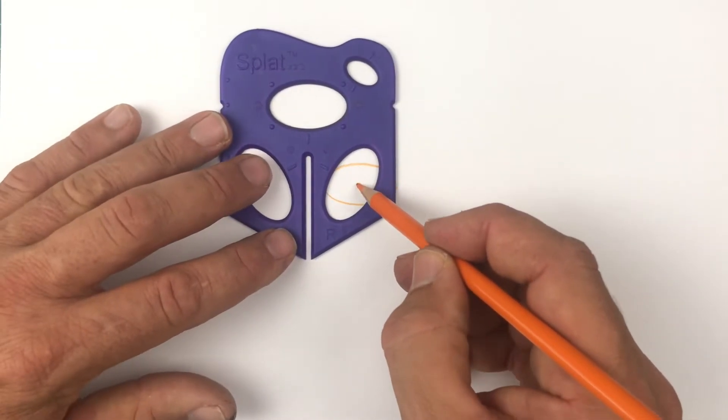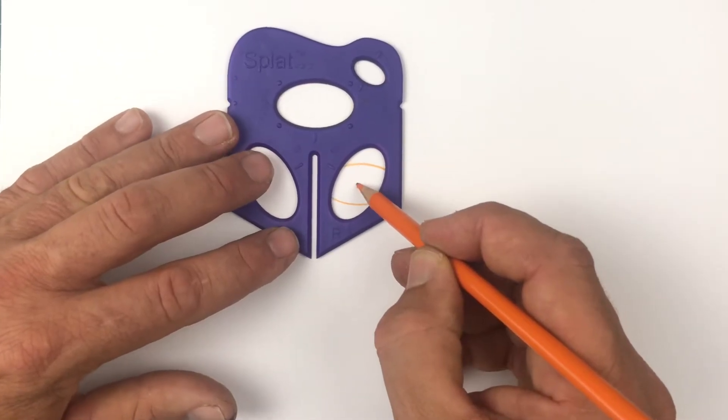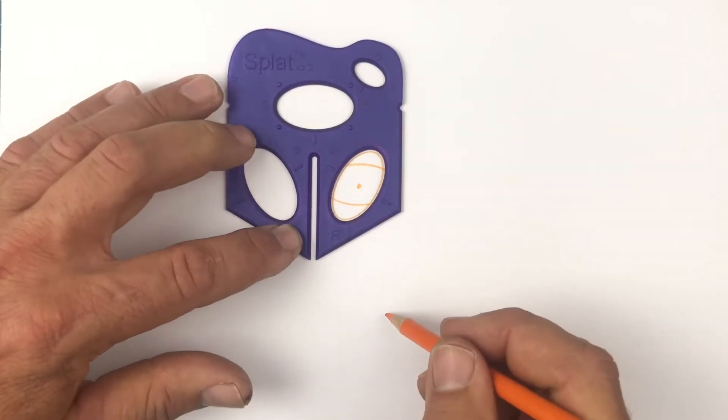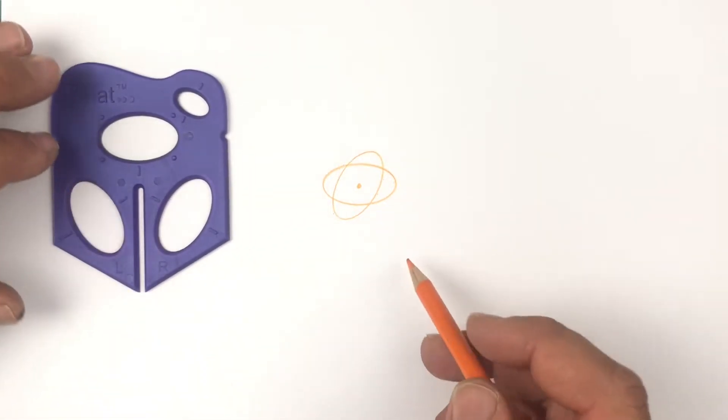Notice how I'm keeping the splat straight up and down. Pick another ellipse, center it and draw again. Do the same thing for the third ellipse.